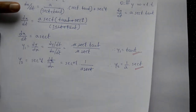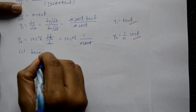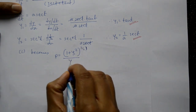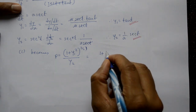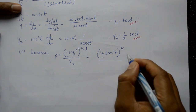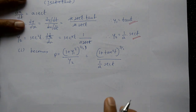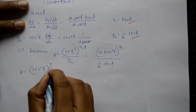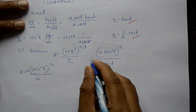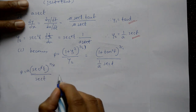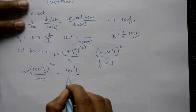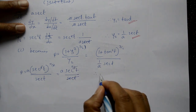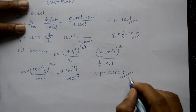Now substitute into equation one: ρ = (1 + y₁²)^(3/2) / y₂ = (1 + tan²t)^(3/2) / ((1/a)·sec t). Since 1 + tan²t = sec²t, this becomes (sec²t)^(3/2) / ((1/a)·sec t) = sec³t · a / sec t. Cancelling, ρ = a·sec²t. This is the required answer.